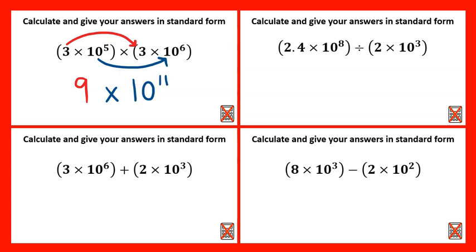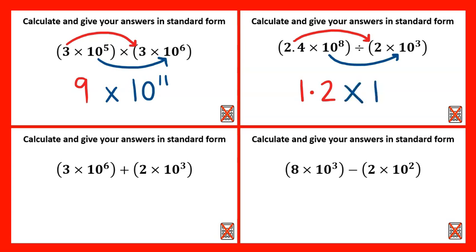With division we can do the same but we'll be dividing instead. So two point four divided by two is one point two. And ten to the power of eight divided by ten to the power of three — we can use the division rule for laws of indices, meaning we subtract. So the final answer would be one point two times ten to the power of eight minus three, which is five.